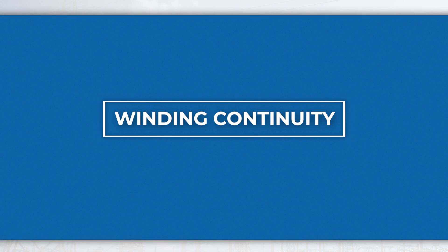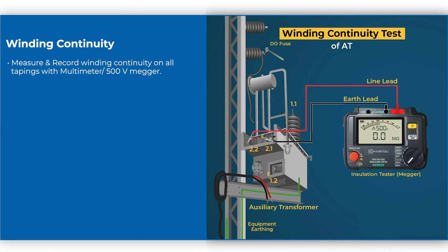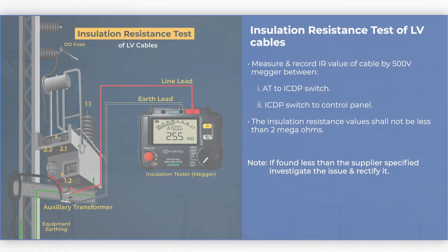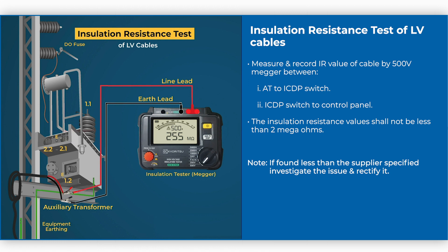Winding continuity: Measure and record winding continuity on all tapings with a multimeter or 500 volt megger. For insulation resistance test of LV cables, measure and record IR value of cable by 500 volt megger between AT to ICDP switch and ICDP switch to control panel. The insulation resistance values shall not be less than 2 mega ohms. If found less than the supplier specified value, investigate the issue and rectify it.